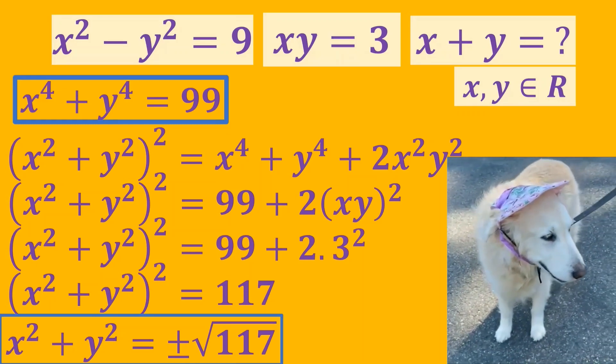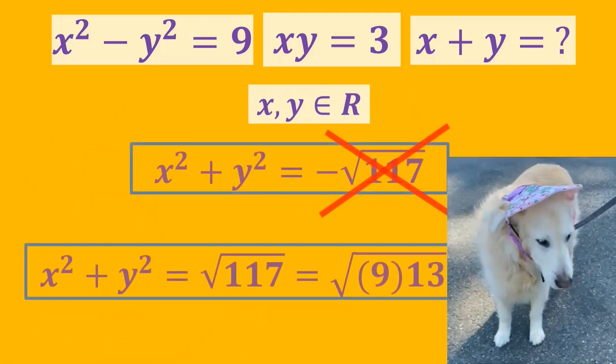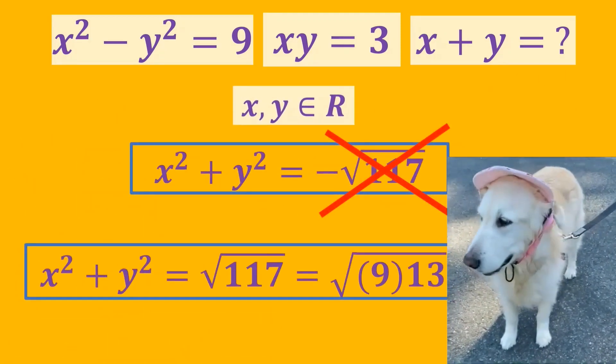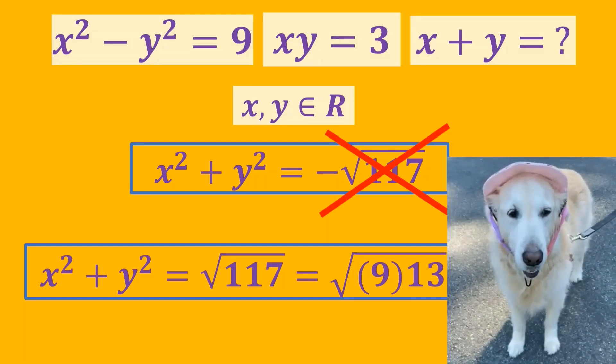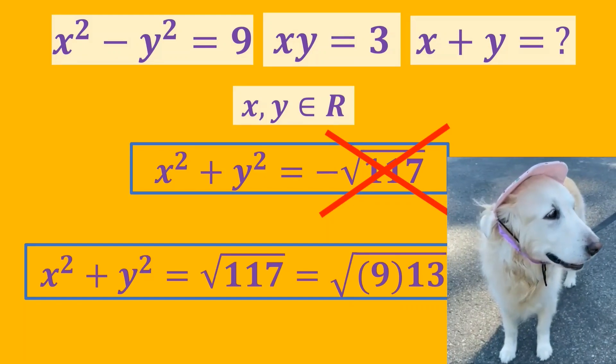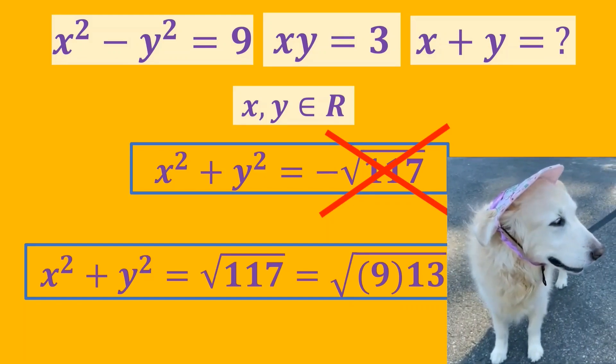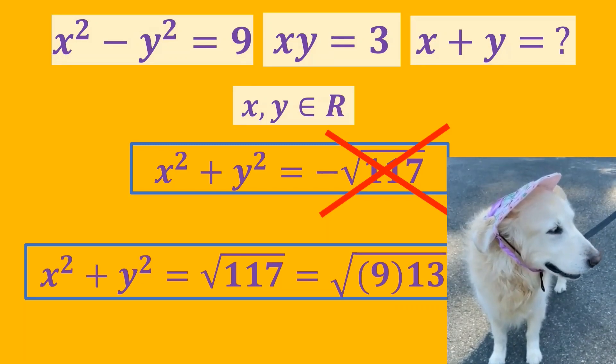But let's think about it one more time. The sum of two squares cannot be a negative number here because x and y are real numbers. The correct number here is positive square root of 117. We can write square root of 117 as 3 times square root of 13.